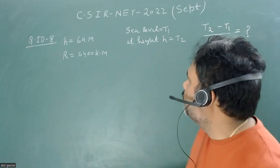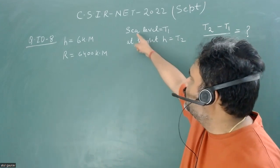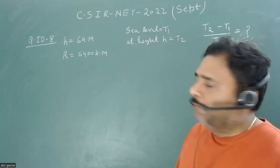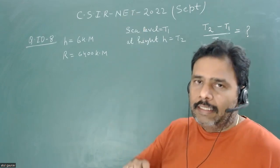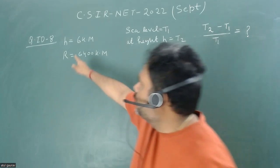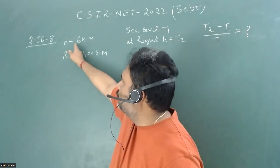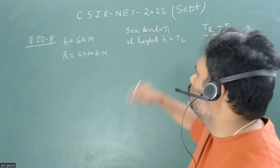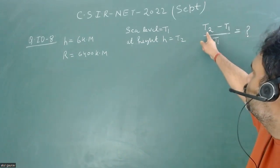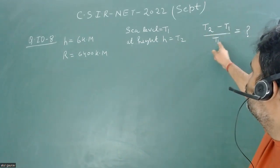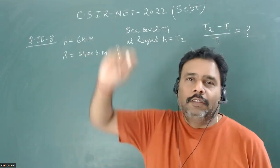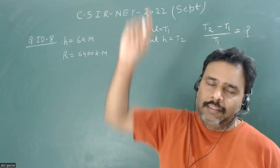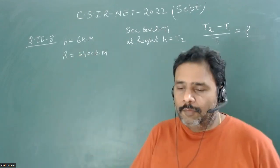In this problem, it is given that the time period of a simple pendulum at sea level is t1, and when that pendulum is kept at some height—at a height of 6 kilometers—that will be t2. So we have to calculate (t2-t1)/t1. This is the height of some mountain, so you are doing this experiment at some mountain whose height is 6 kilometers.